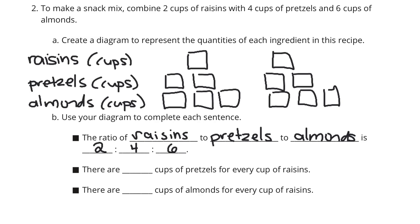Now, there are blank cups of pretzels for every 1 cup of raisins. Well, if we look here. If I kind of group these a little bit here, we have 1 cup of raisins, 1 cup of raisins. We have 2 cups of pretzels and we have 3 cups of almonds in each group. So, what that enables us to do now. For every 1 cup of raisins, how many cups of pretzels are there? Well, 2. There are 2 cups of pretzels for every 1 cup of raisin. And there are 3 cups of almonds for every 1 cup of raisins.